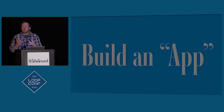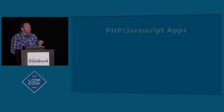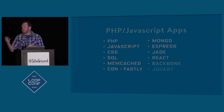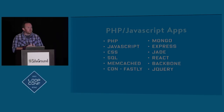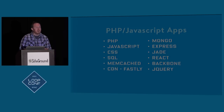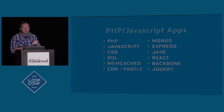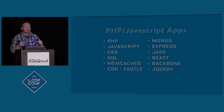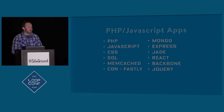I want to talk a little bit about building an app. We have JavaScript, we have WordPress, and we want to kind of smash them together. Suddenly you're not just building a simple app — you've got PHP, JavaScript, CSS, SQL, memcache for caching, a Fastly or Akamai CDN frontend, then you're getting into JavaScript with Mongo as a middleware database, Express for routing, jQuery templating, React, Backbone, and of course jQuery — because jQuery just has to be used on every project. So that's a lot to learn.